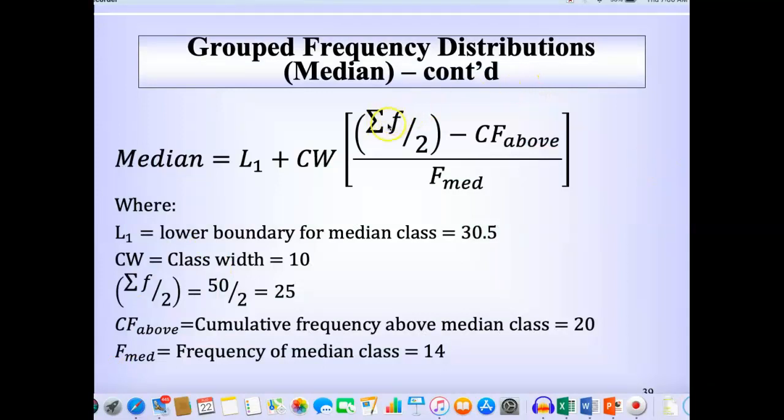The last one is the summation of f over 2. The total frequency was 50, and 50 divided by 2 is 25.